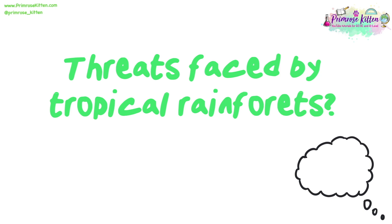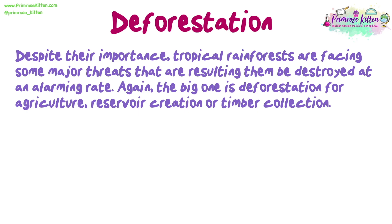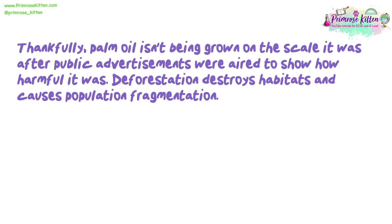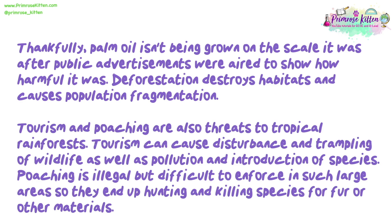Despite their importance, tropical rainforests face major threats resulting in them being destroyed at an alarming rate. The biggest threat is deforestation for agriculture, reservoir creation or timber collection. Fairly recently, cash crops such as palm oil have been grown on such a large scale that they have resulted in huge forest losses. These are called cash crops as they sell at a good rate, so farmers plant as many as possible for maximum income. Thankfully, palm oil isn't being grown on the scale it was after public advertisements aired to show how harmful it was. Deforestation destroys habitats and causes population fragmentation. Tourism and poaching are also threats — tourism can cause disturbance, trampling of wildlife, pollution and introduction of species. Poaching is illegal but difficult to enforce in such a large area, leading to species being hunted for fur or other materials.